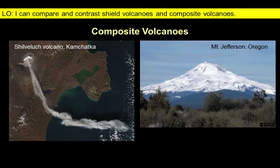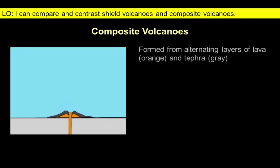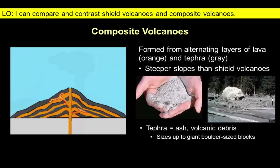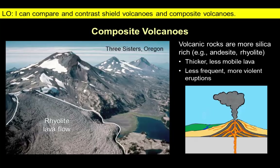In contrast to shield volcanoes, composite volcanoes have a distinctive steep triangular profile. Eruptions of composite volcanoes are much more violent than those of shield volcanoes and are characterized by the production of a mix of tephra and thick viscous lava. In addition, some of the magma will force its way into the interior of the volcano and provide support for the structure's growth. Volcanic rocks in composite volcanoes are more silica rich, resulting in more viscous lava and more violent eruptions often separated by hundreds or thousands of years.